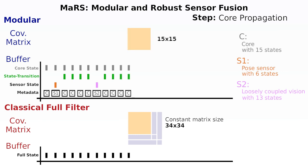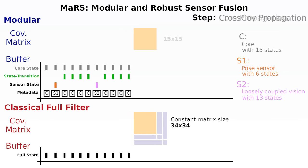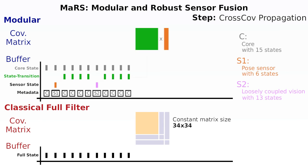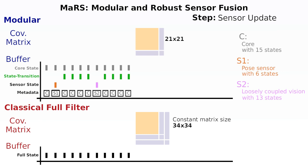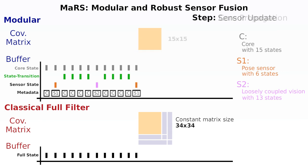We introduce four additional propagation steps in the same way as before. At this point we are introducing another measurement for Sensor 1. Since the covariance of Sensor 1 has not been altered after initialization and has not been propagated, we have to fetch the state transition matrices between the last information of Sensor 1 and the current state. The generated state transition block matrix is used to propagate the cross-correlation terms for the core and sensor terms. A modular update with a 21 by 21 covariance matrix is performed after the cross-correlation terms have been propagated. The update is performed by the sensor module and can be performed as for the normal EKF approach. This is also the point at which statistical tests for outlier rejection can be applied. The measurement of Sensor 1 results in a full state and covariance update with a 34 by 34 covariance matrix for the classical approach.